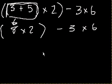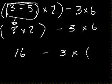So then we get 8 times 2 minus 3 times 6, right? Because we just took this. 3 plus 5 just became this 8. And what do we do next? Well, once again, we have parentheses. So we do whatever inside the parentheses first. We do the 8 times 2, and the 8 times 2 is 16.